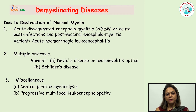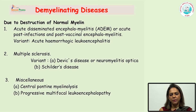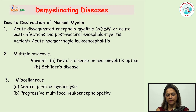Primarily, the diseases which occur due to destruction of myelin can be of two main types, namely acute disseminated encephalomyelitis or ADEM, which occurs mostly in post-viral conditions or after a vaccination, and its variant includes acute hemorrhagic leukoencephalitis. The second most common demyelinating disease is multiple sclerosis, and other miscellaneous demyelinating diseases include central pontine myelinosis and progressive multifocal leukoencephalopathy. I will be discussing these diseases one by one.